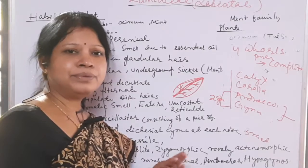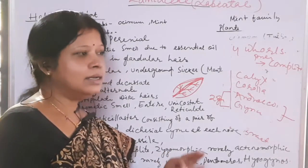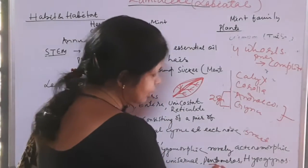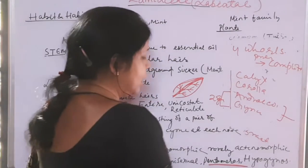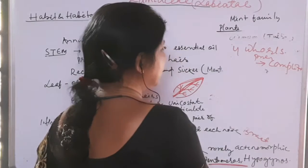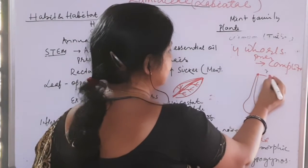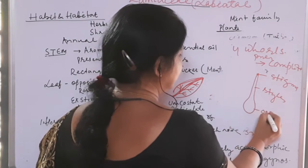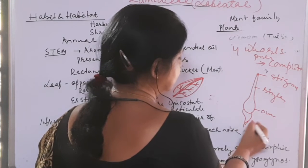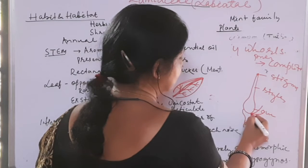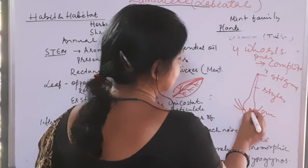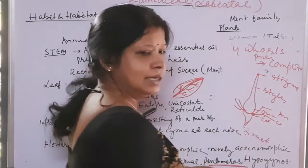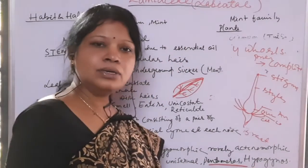The flowers are pentamerous — the number of sepals, petals, or stamens is five or a multiple of five. They are also hypogynous, meaning the ovary is superior: the calyx, corolla, and androecium all arise below the ovary from the receptacle. This condition is called hypogynous or superior ovary.